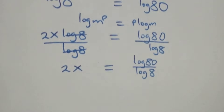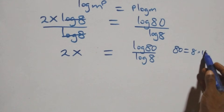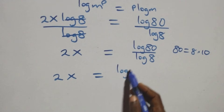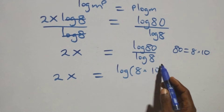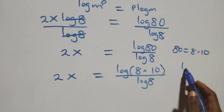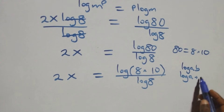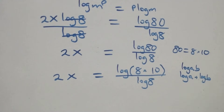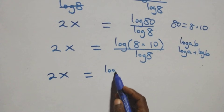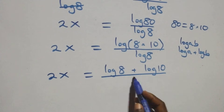Then, next step here: we can express 80 as 8 times 10. And what we have becomes 2x equals log(8 times 10) over log 8. This follows the log product rule: when we have log(a times b), this is the same thing as log a plus log b. So we have 2x equals log 8 plus log 10, all over log 8.